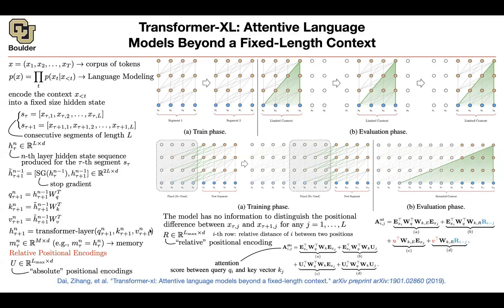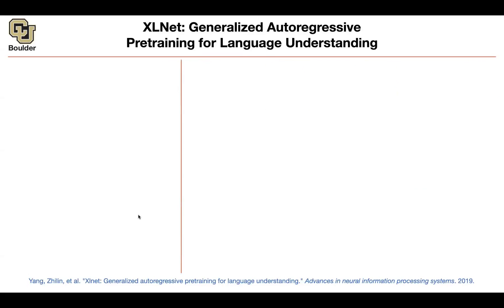Now let's move on to the next paper, which is an extension of Transformer XL, and that's called XLNet. I like this paper because it's going to help you merge two ideas: the ideas of GPT and the decoder part of your transformer, and the ideas of BERT and the encoder part of the transformer. This is beautiful.